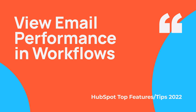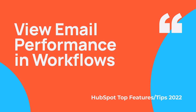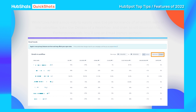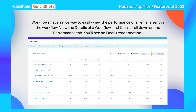Just a nice little reminder that you can view the email performance in workflows. So let's say you've got a nurture workflow — it sends out 10 emails over time, and there's maybe branching based on criteria in the workflow. So you've got this long workflow sending emails to a contact and you're wondering which email is working.